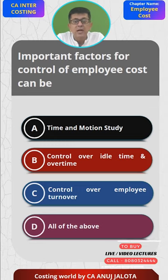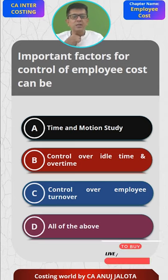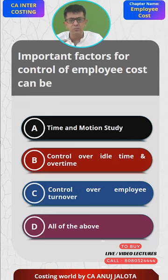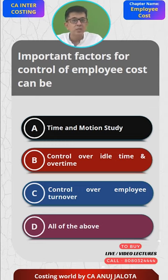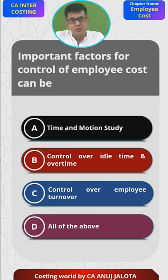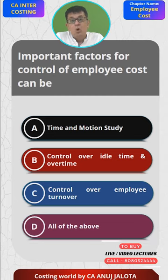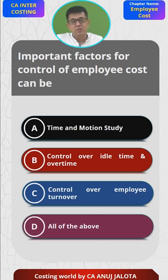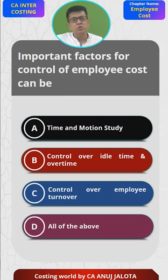Option B: control over idle time and overtime. Obviously, idle time increases cost. Sometimes workers can be idle because of mistakes of management, like not allotting a job to a worker — he'll be sitting idle while the company is still paying him. Not maintaining machines properly can also lead to breakdowns and idle workers. As for overtime, workers sometimes tend to work slow during normal time so they can claim overtime, since overtime rates are higher. So if you want to control your cost, control idle time and control overtime.